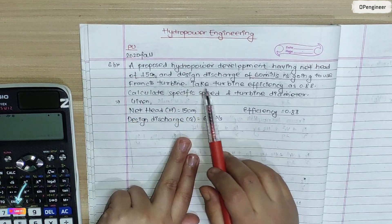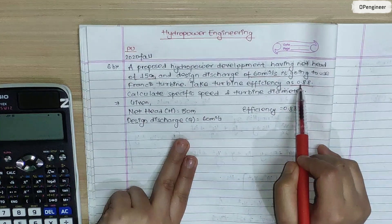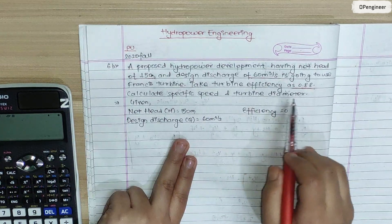The turbine efficiency is 0.88. We need to calculate the specific speed and turbine diameter.